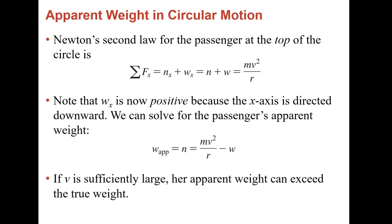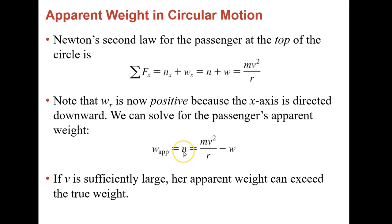At the top, weight and normal force are going in the same direction. So your net force — your apparent weight — is the addition of them: normal plus weight equals your centripetal force. Your apparent weight, which is applied by your normal force, is this time going to be your centripetal force minus your weight.